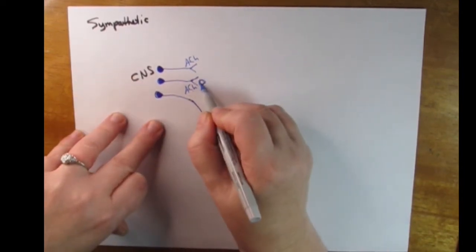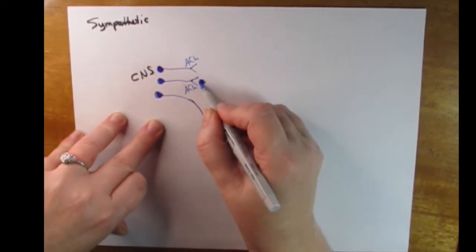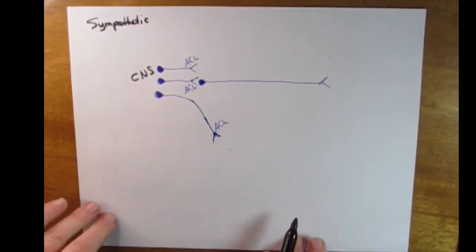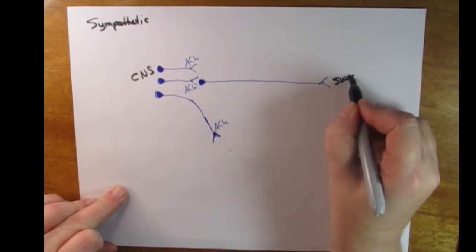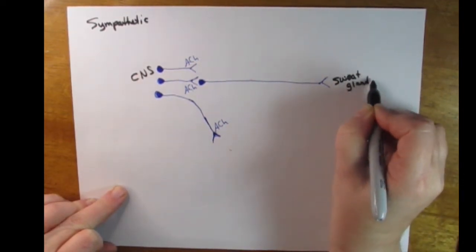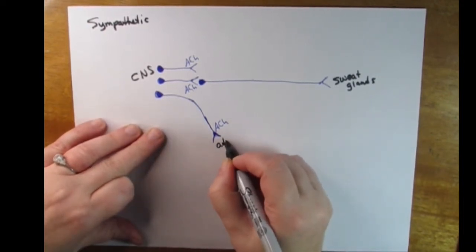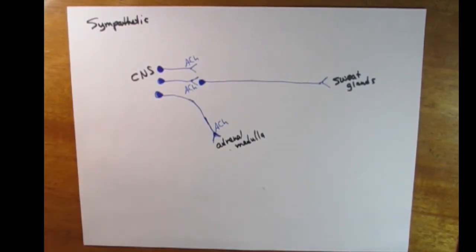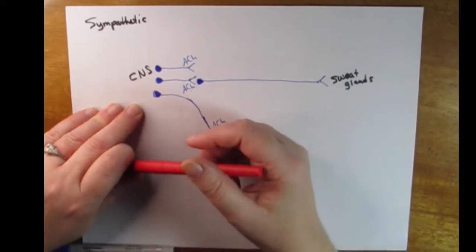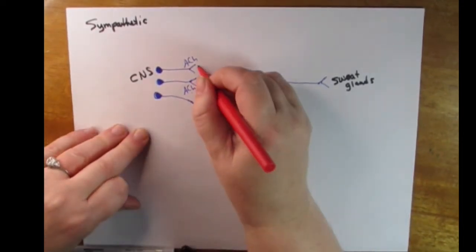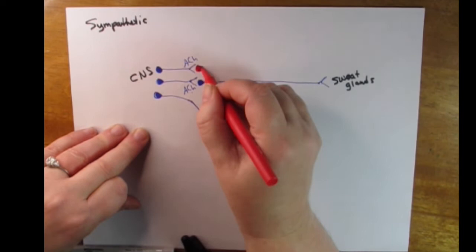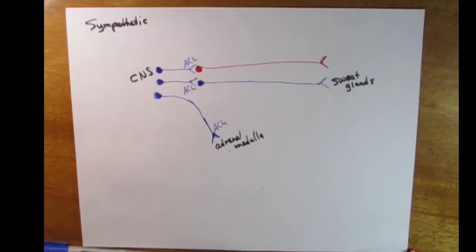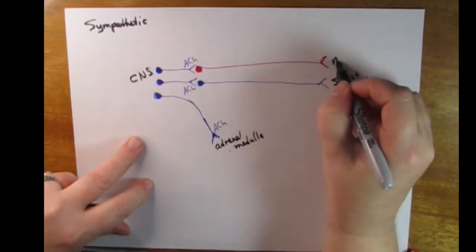The first story is one of the unusual situations where we have a cholinergic postganglionic cell that interacts directly with the sweat glands. The second unusual story is where we have a cholinergic preganglionic cell that interacts directly with the cells of the adrenal medulla. The third story is where we have a cholinergic preganglionic cell but an adrenergic postganglionic cell, which releases norepinephrine primarily, targeting most of the targets of the sympathetic nervous system.